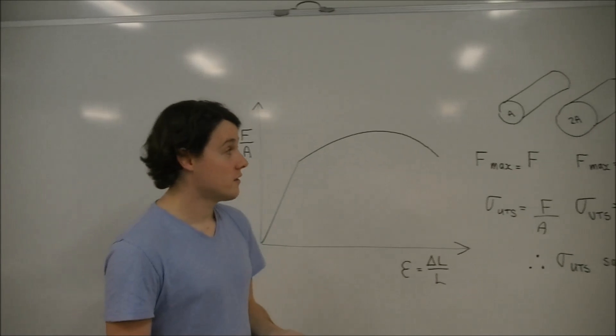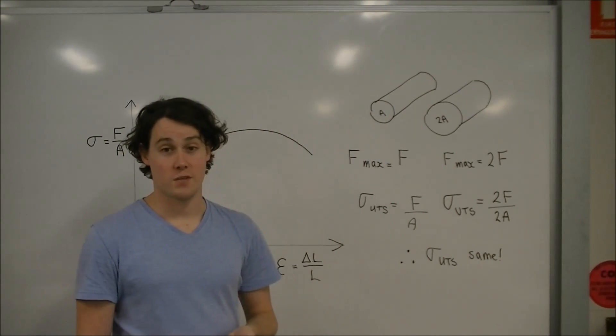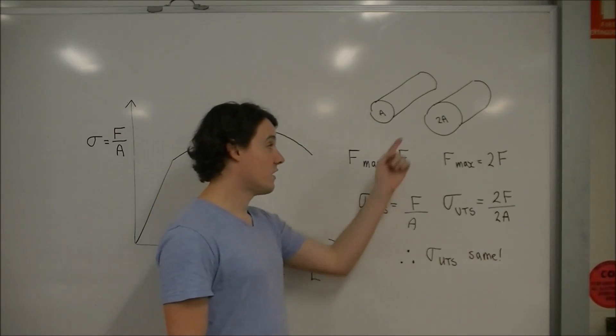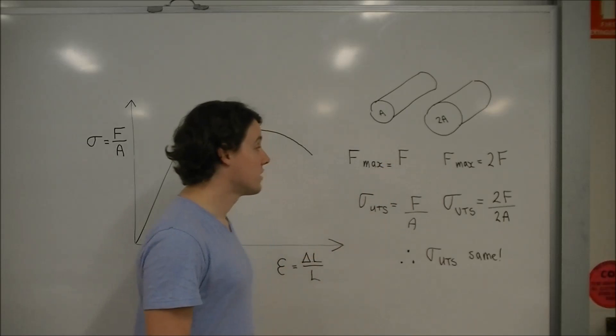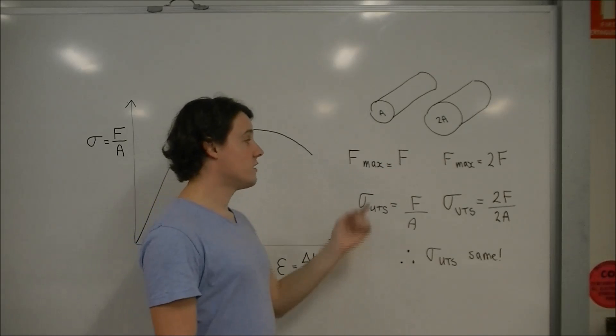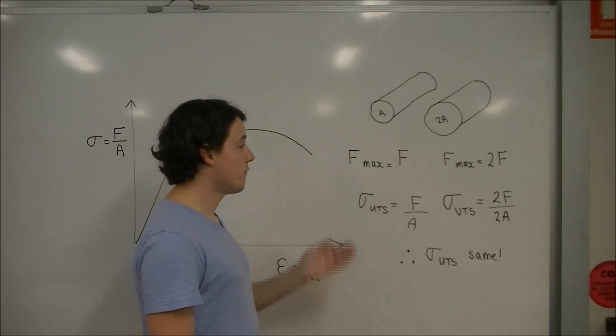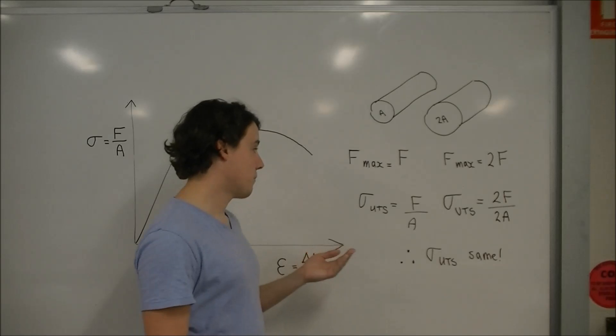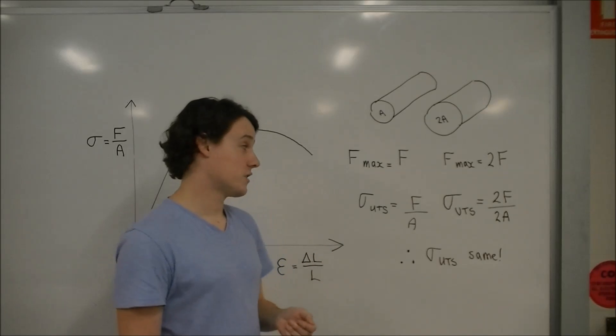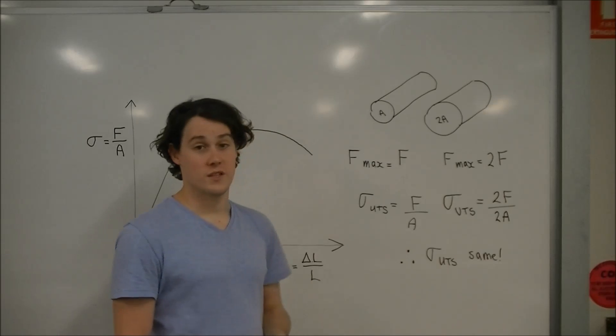So just to reiterate the point, if we were to have two tensile samples made out of the same material, but one had a cross sectional area twice as large as the other, we would find it could take twice the force as the other. But if we converted force to stress, we would find that both samples could take the same maximum stress. Therefore, they would have the same ultimate tensile strength.